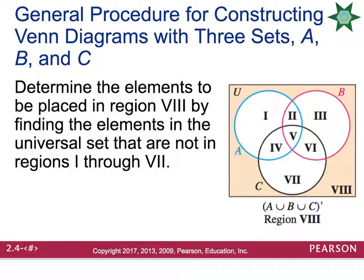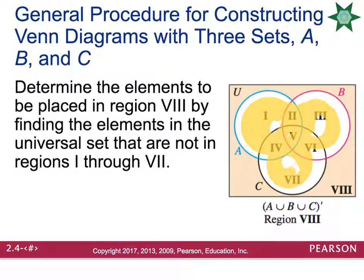Last, you want to figure out what's going to go on the outside of the circles. Typically you want to have all of the circles completed first and filled in. Then once you know all the items that are going to go in the circles, you take those away from the universal set, and anything that's left will go on the outside of the circles in Region 8.